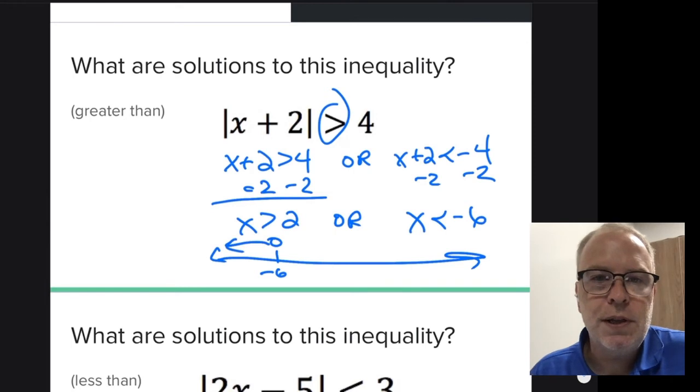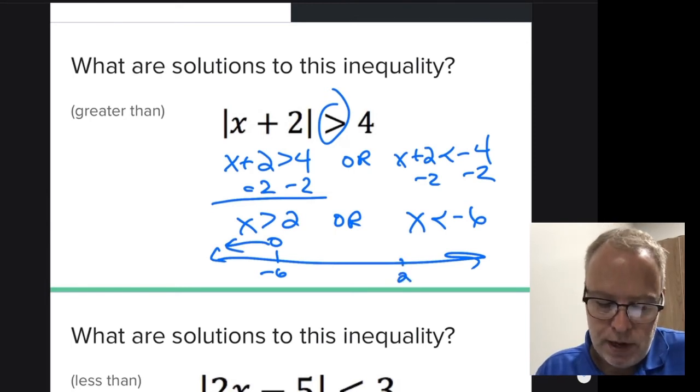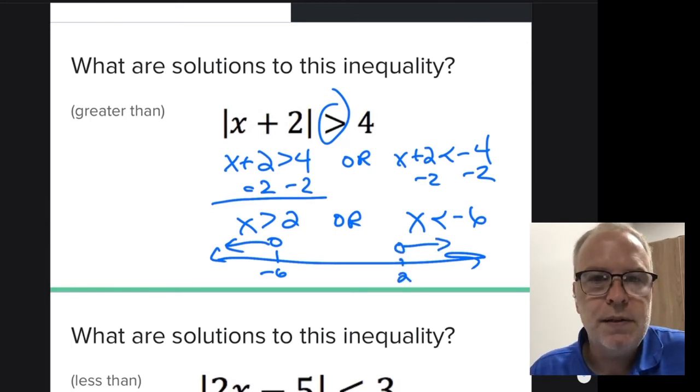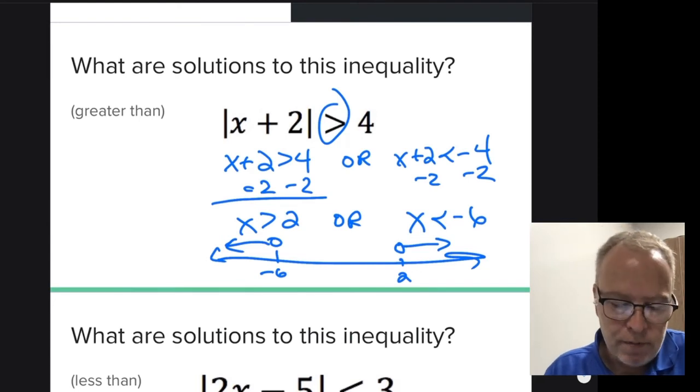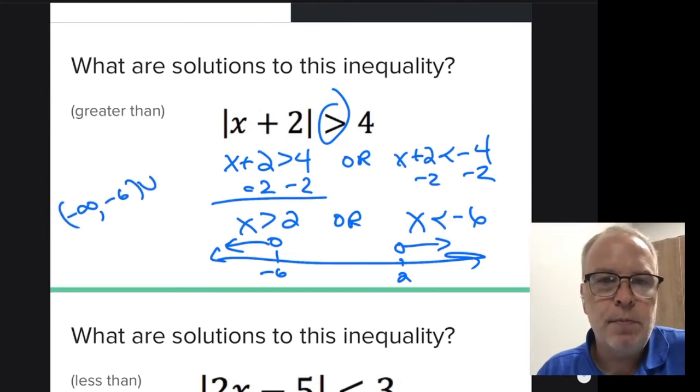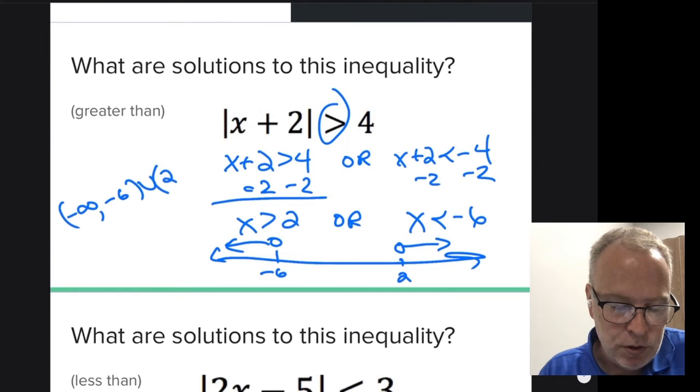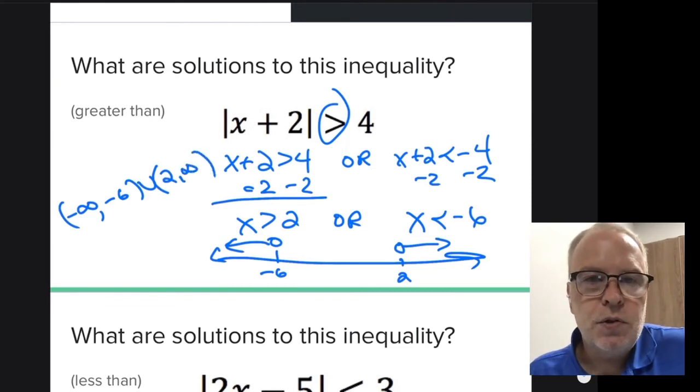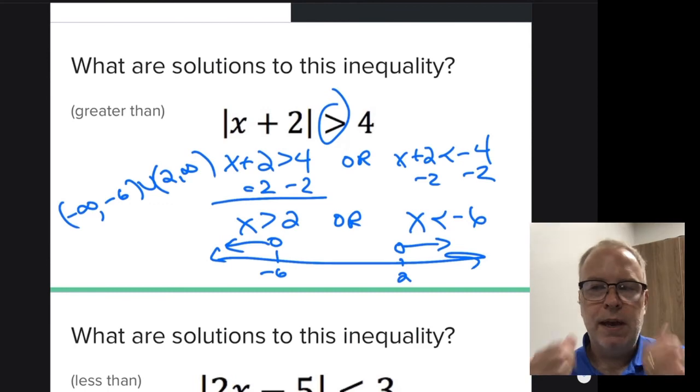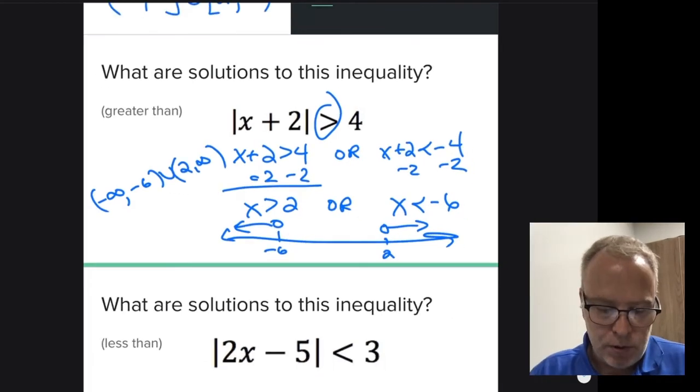So if you're doing a graph, here's negative six, we'd have a closed or open circle going to the left. And then at two, we'd have an open circle going to the right. So this is a diverging graph. In interval notation, negative infinity comma negative six union, you always start with a smaller member which is the negative, and then two to infinity. So with a greater than symbol, you get one of these diverging type graphs.